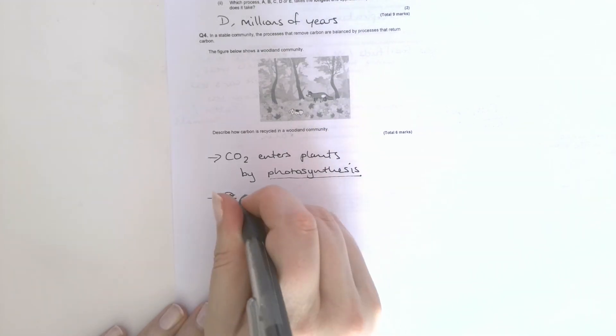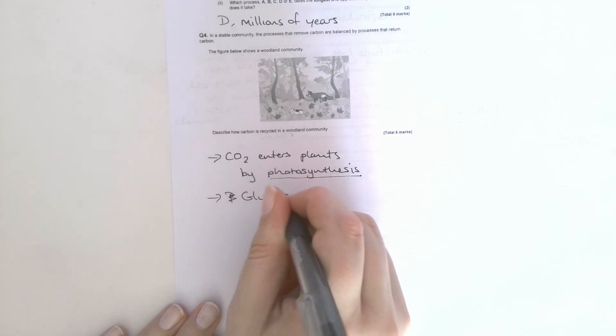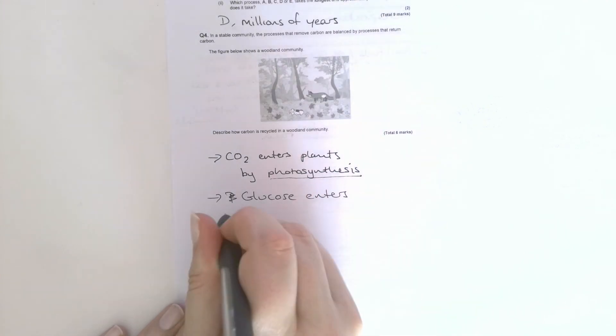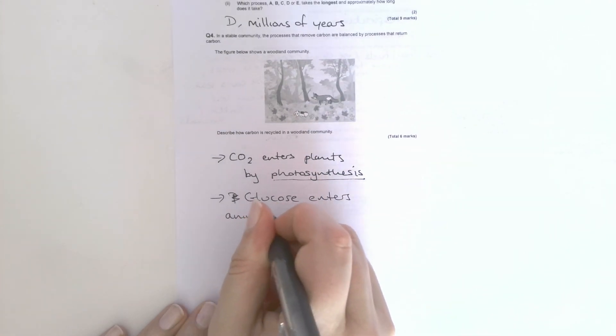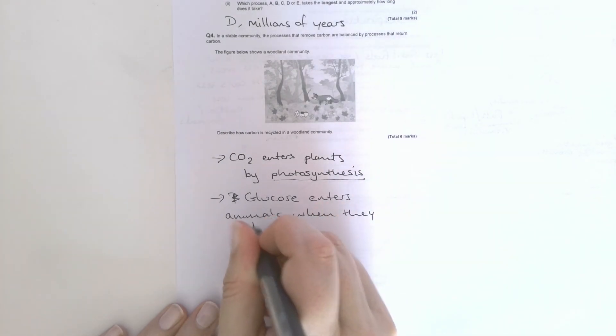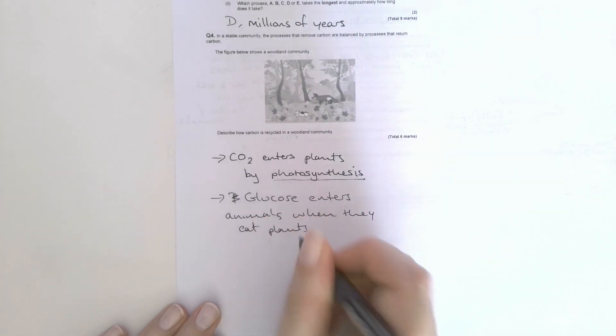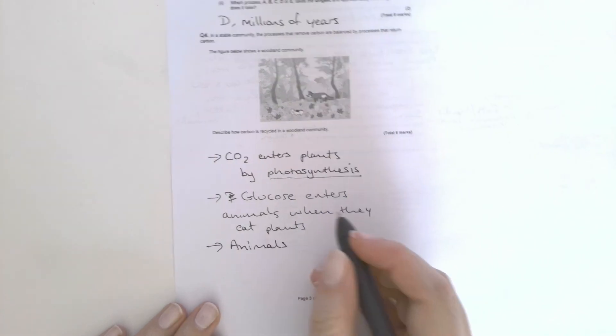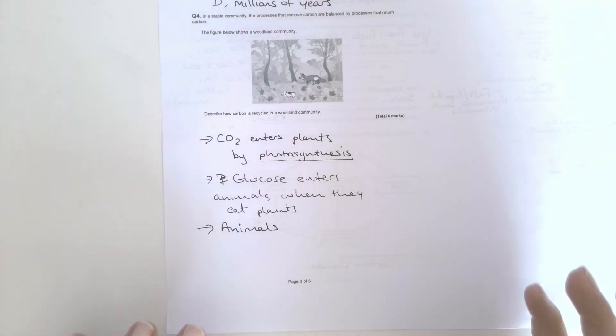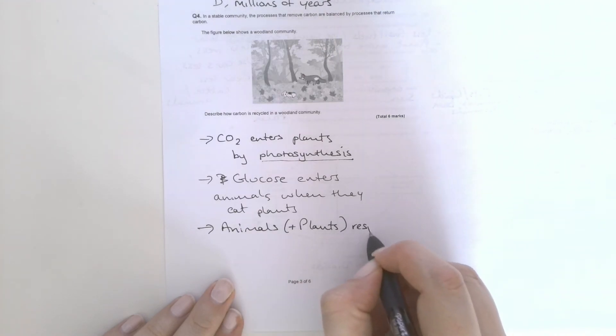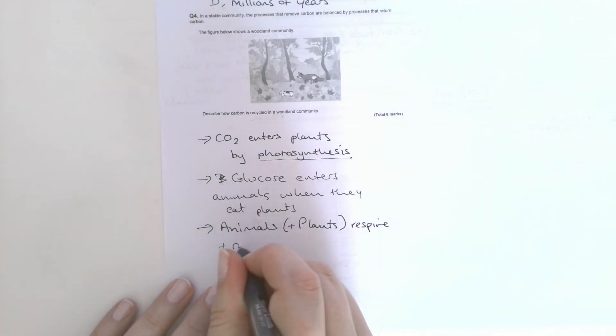It then is glucose, that's what the form of it is, and that enters animals when they eat plants. Animals, and here's one that quite a few of you, which is easily done, it gets confusing, but also plants respire.